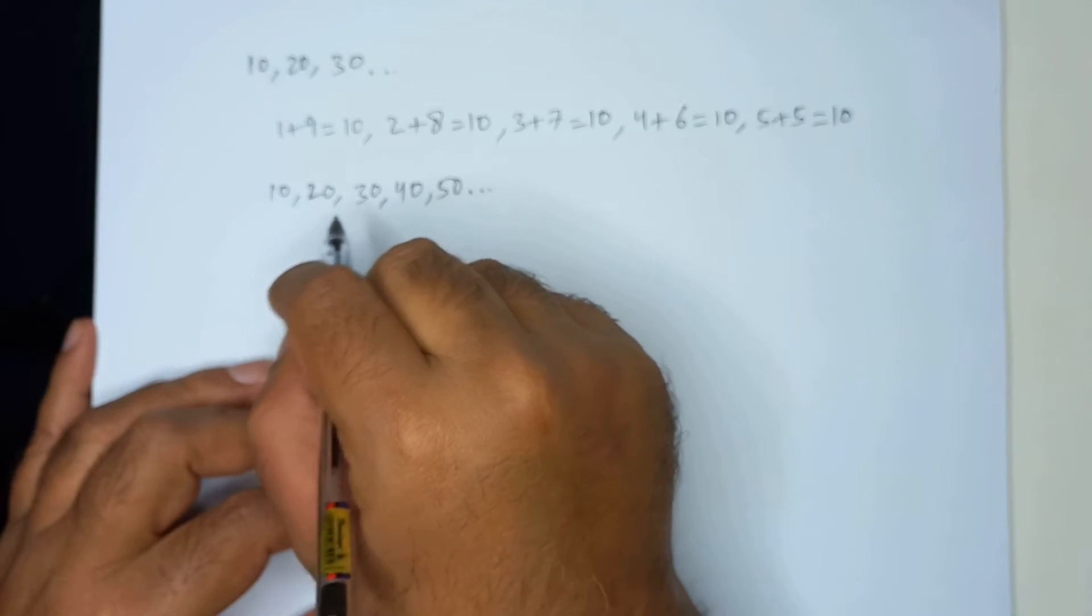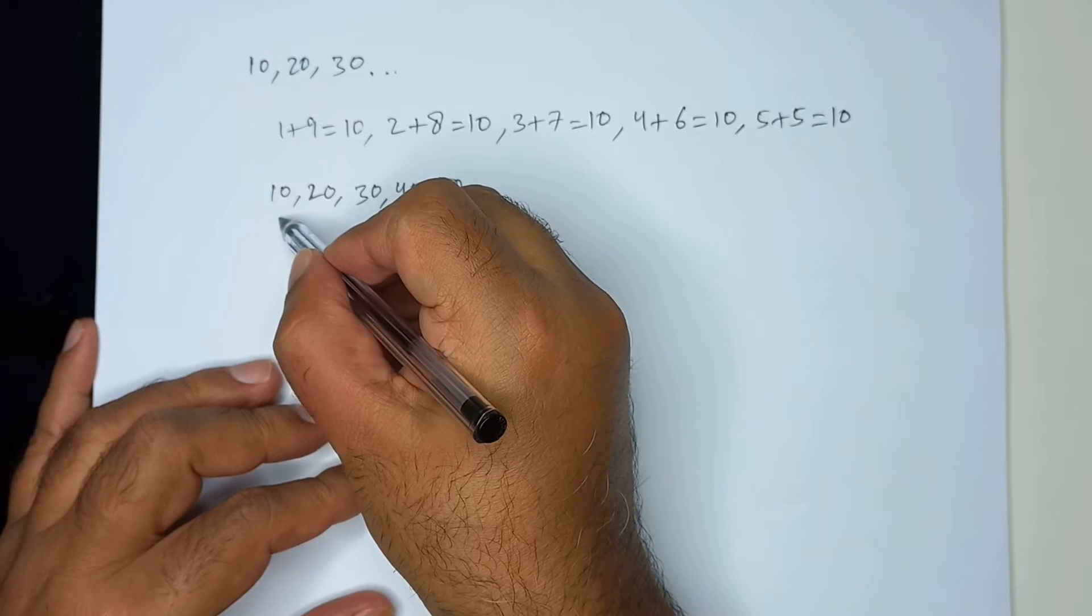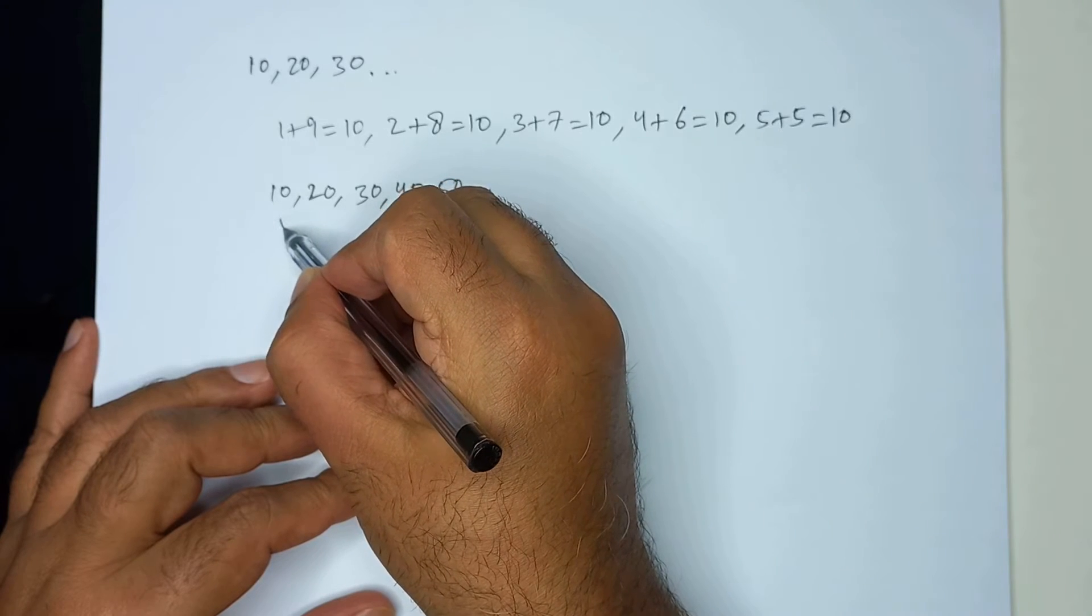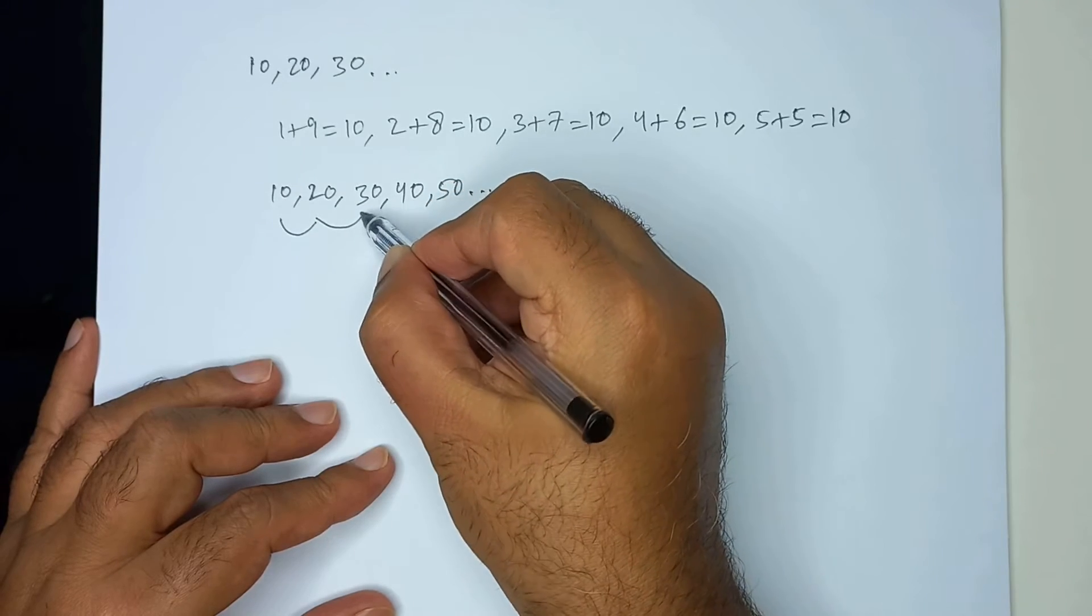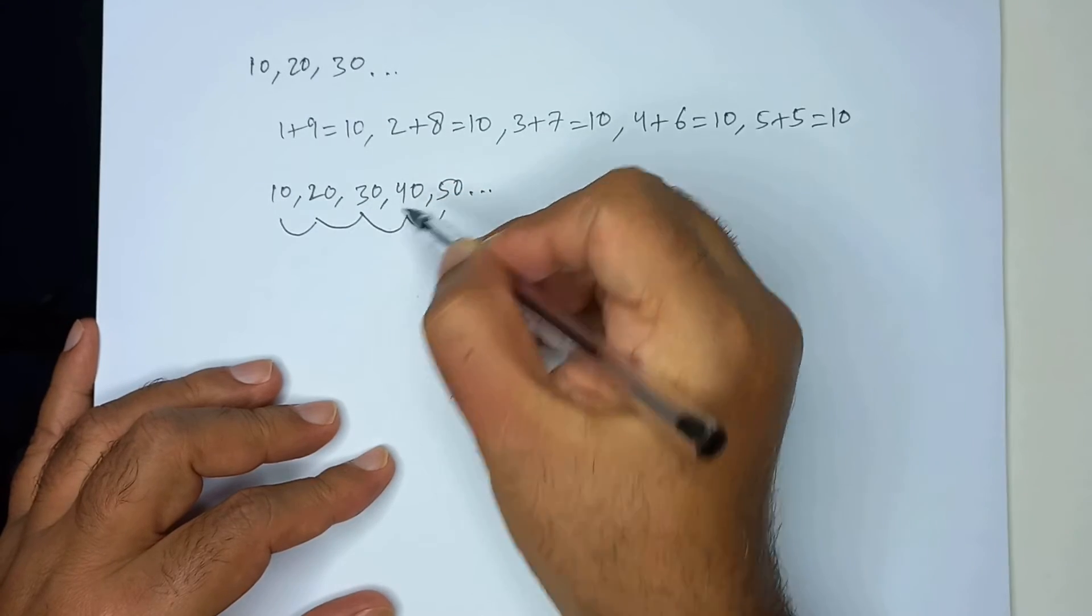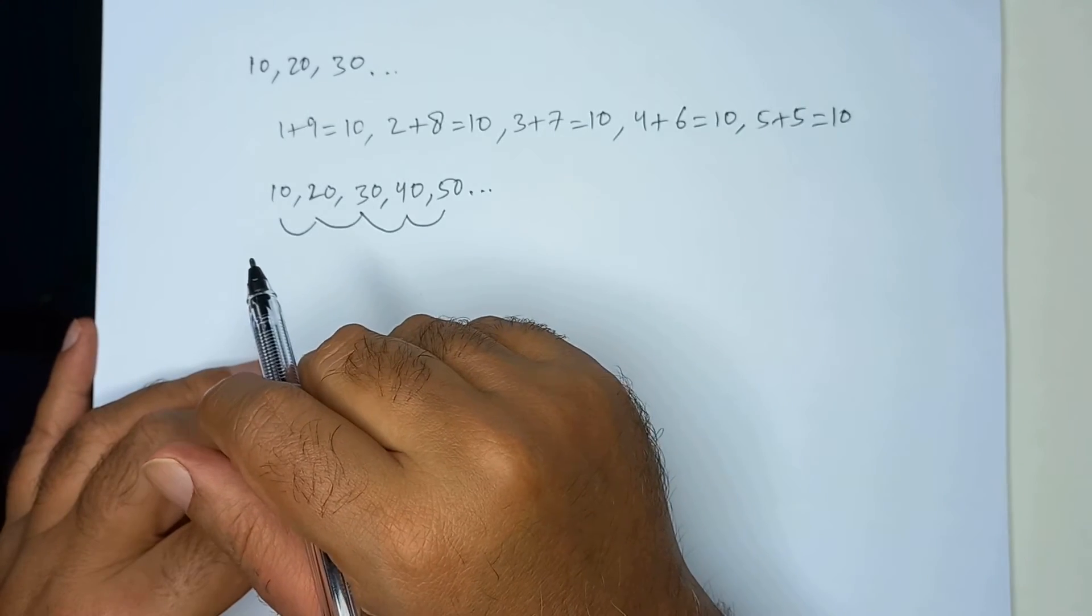These numbers we call them multiples of 10 because they start at 10, then they go up in 10s. 10 plus 10 is 20, then plus 10 is 30, then plus 10 is 40, then plus 10 is 50 and so on.